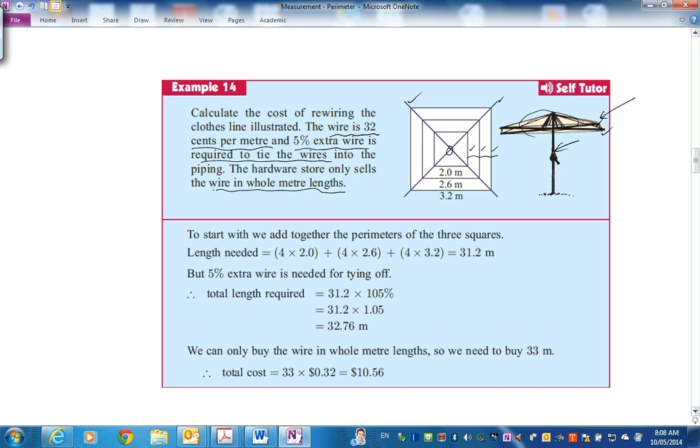All these, the perimeters. The perimeters of the three squares. So one is 2 metres square. So there's 4 lots of 2 metres to make that little square in the middle. 4 lots of 2.6 and 4 lots of 3.2. If you add them all up you've got 31.2 metres. That's your total length of wire just to do the wiring. But we've got to tie it off. So you want an extra 5%. Do you remember this from before? You want 100% of 31.2 plus an extra 5%. That's 105%. Which is percent means divided by 100 or per 100. So that means you'll multiply by 1.05. So they're doing that here. So that's actually the total amount of wire you need for tying off as well.